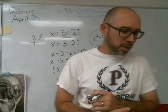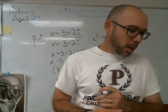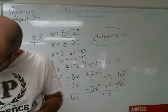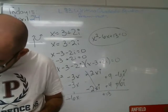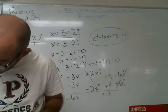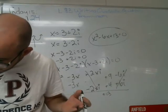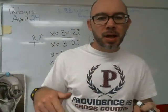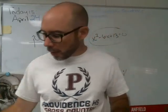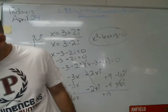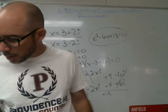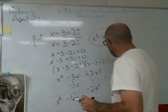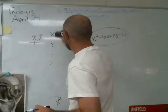The result is x squared minus 6x plus 13 equals 0. That equation has two roots: 3 plus 2i and 3 minus 2i. If you graph it, you get a parabola that doesn't cross the x-axis. The book uses a slightly different method, but this method is equivalent — you can compare the two and see which you prefer.